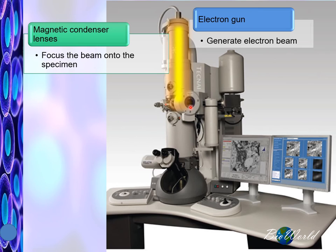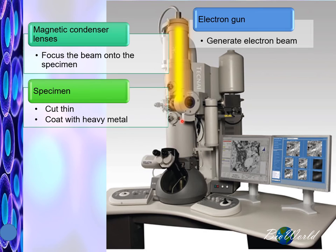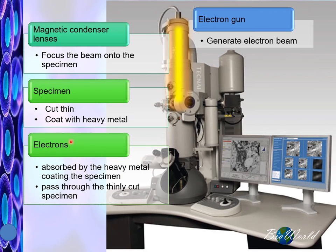When preparing specimens for transmission electron microscopes, there are certain rules to be followed. The specimen must be cut extremely thin and coated with heavy metal. The purpose for this is so that the electrons can do either of these two: one, it can become absorbed by the heavy metal on the specimen, or it can pass through the thinly cut part of the specimen.